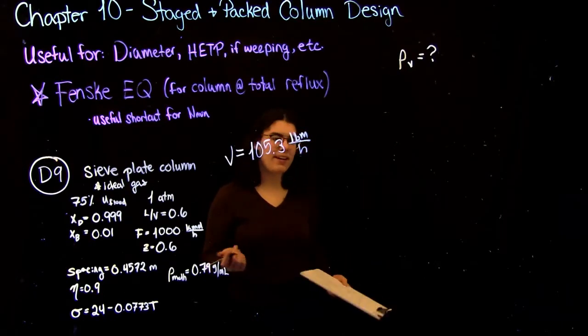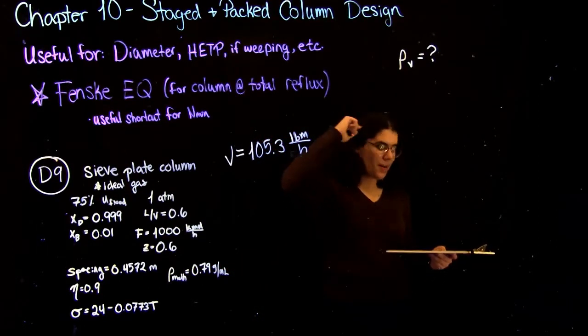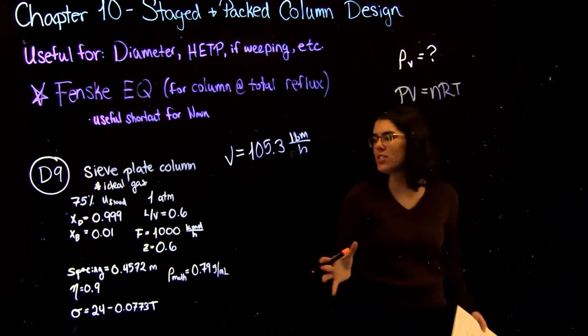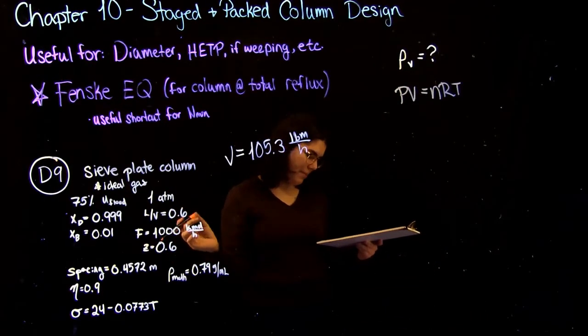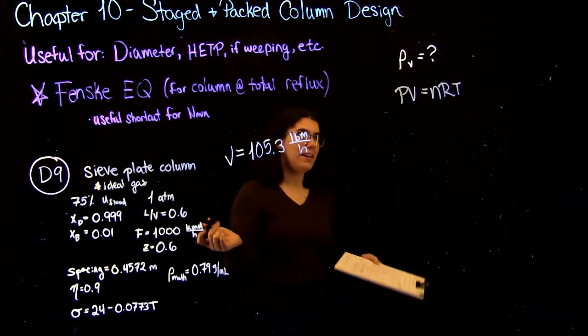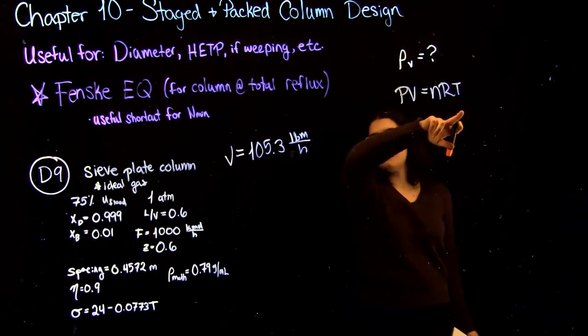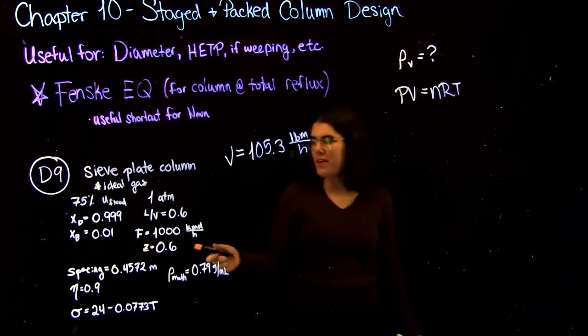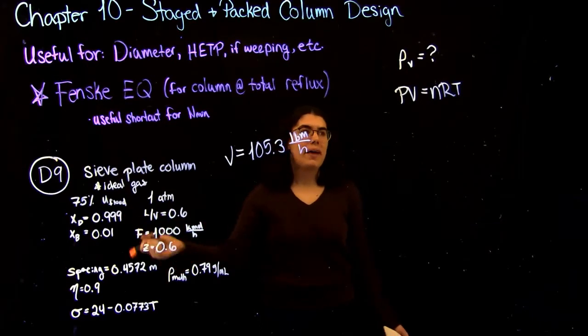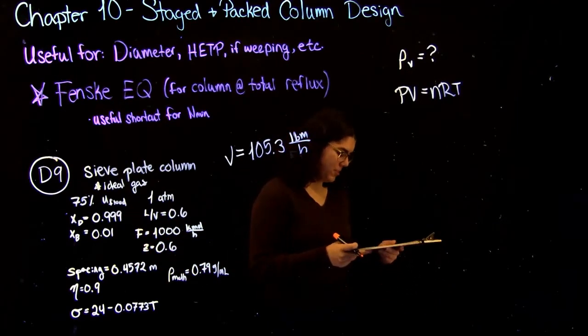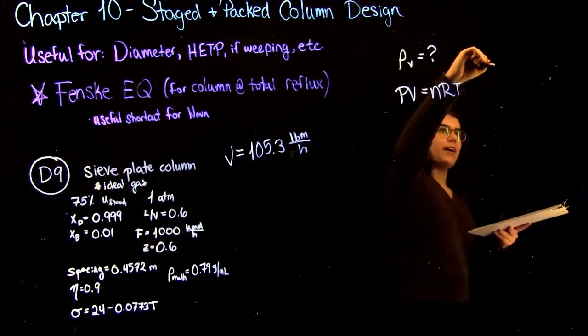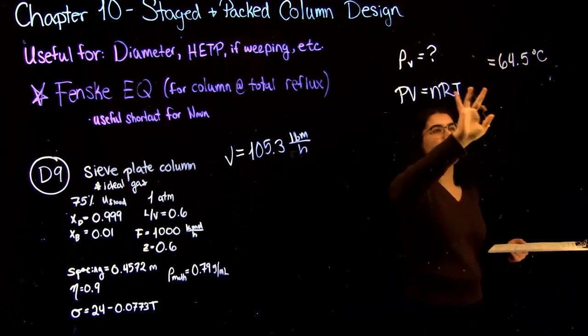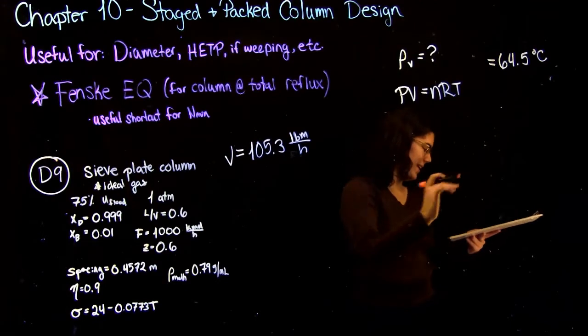So now that we've found the vapor flow rate, the next step is to find the density of this vapor. And this we can do just simply using the ideal gas law. It told us we could assume ideal gas in the question. And we're also given a pressure of one atmosphere. So in order to find the temperature that we need to use for this, we know we're operating at the top of the column right now. And we know that the vapor is basically all methanol. So what that means is the temperature at the top is going to be equal to the boiling temperature of methanol. So if you look it up, it's 64.5 degrees Celsius. For this question, you had to look it up, but usually you would be given it in a question.